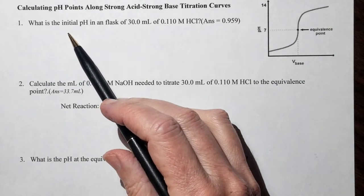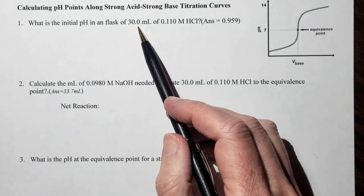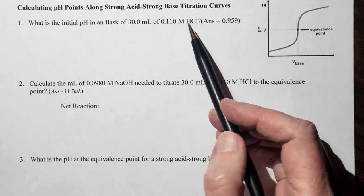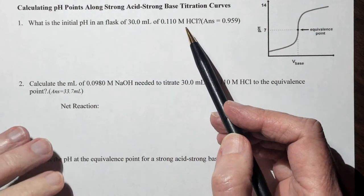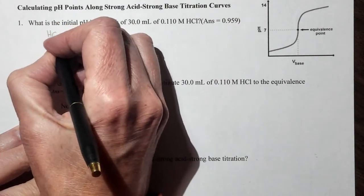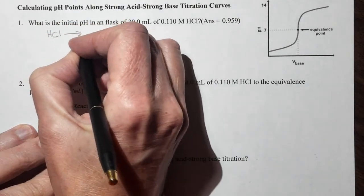And our first question is, what is the initial pH in a flask of 30 mL of 0.11 molar HCl? Well, this is actually a very easy problem because we know that HCl is one of our strong acids.